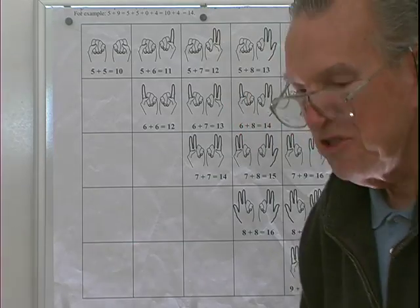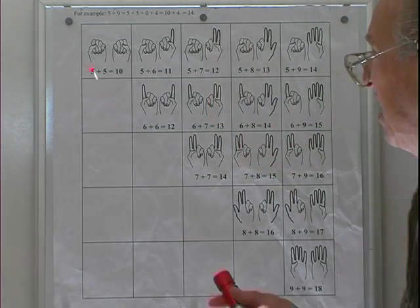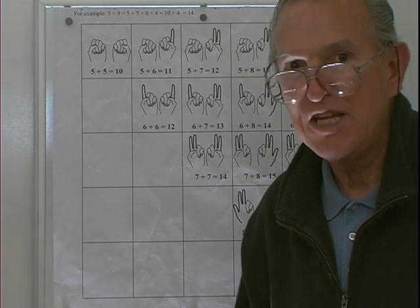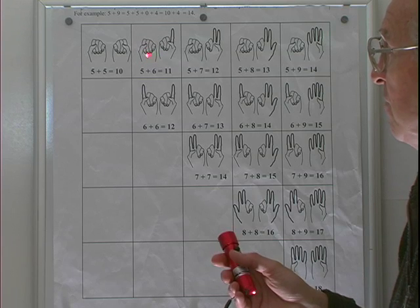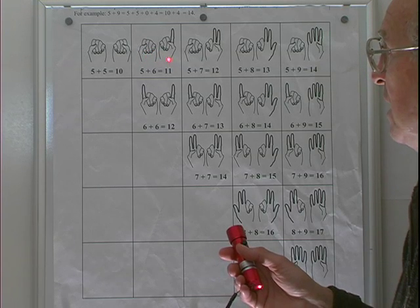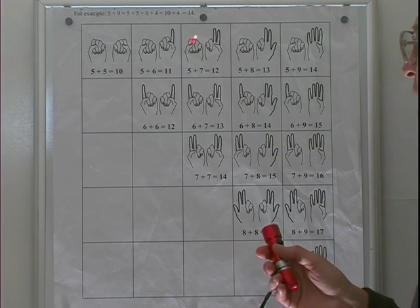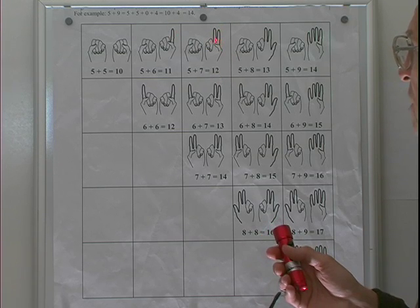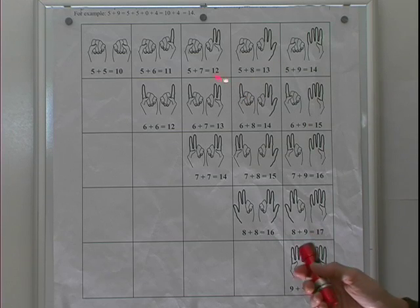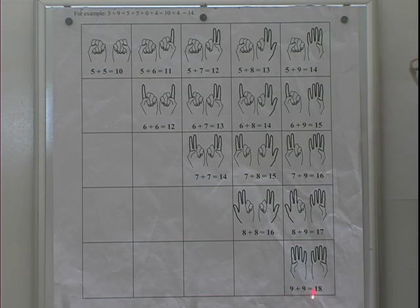This is a summary of the addition table. Two closed fists represent 5 and 5 — that's 10. The left hand represents 5, right hand is a 6 — 5 and 6, 1 extended finger, that's 11. 5 and 7 — 2 extended fingers, that's 12. Count the extended fingers to get the 1s place and put a 1 in for the 10s place in every case, because the smallest two-digit sum is 10 and the largest is 18.